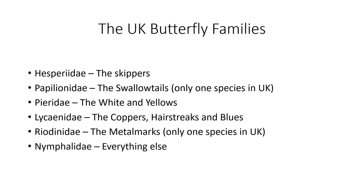We've got six families of butterflies in the UK, and four of these we have in Derbyshire. We're missing the swallowtails and we're missing the metal marks — that's the Duke of Burgundy. That's not one we're ever going to see in Buxton.